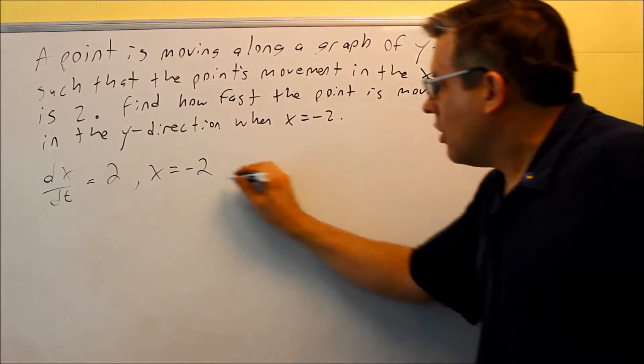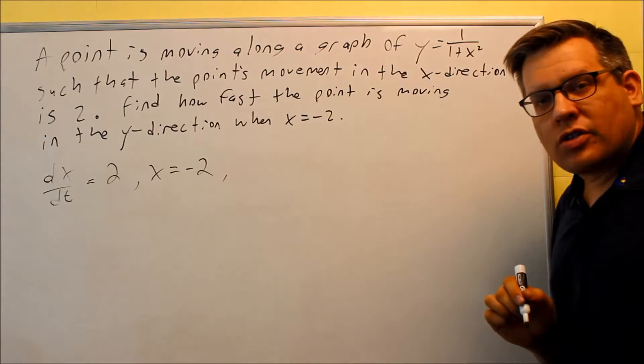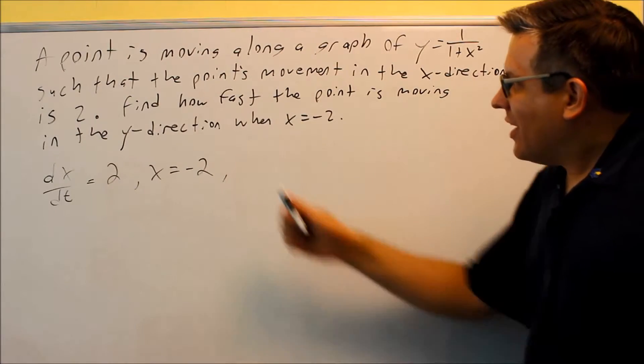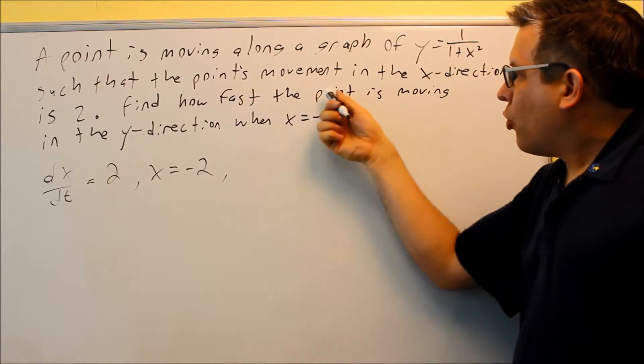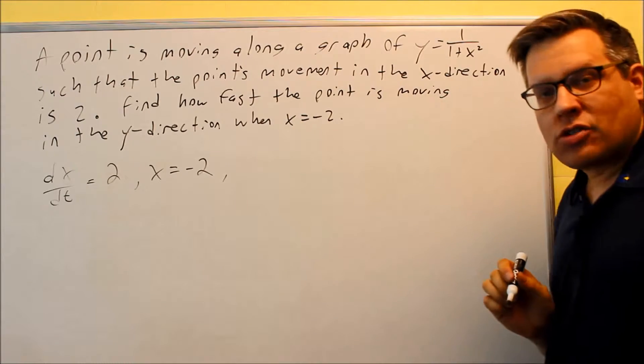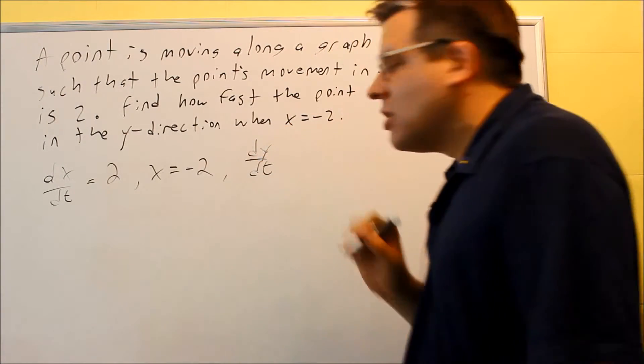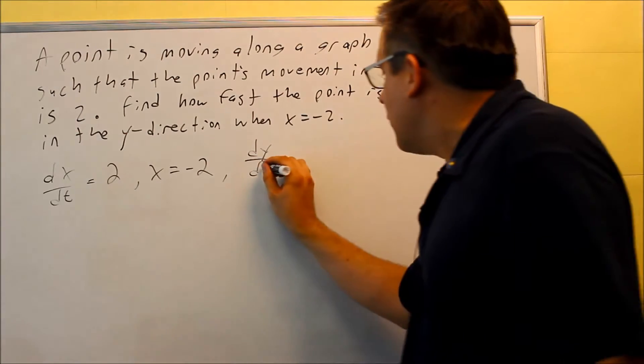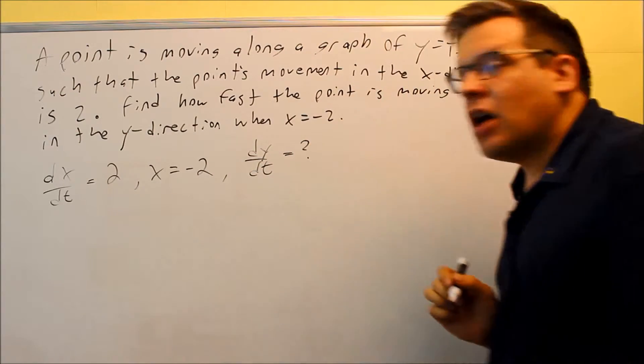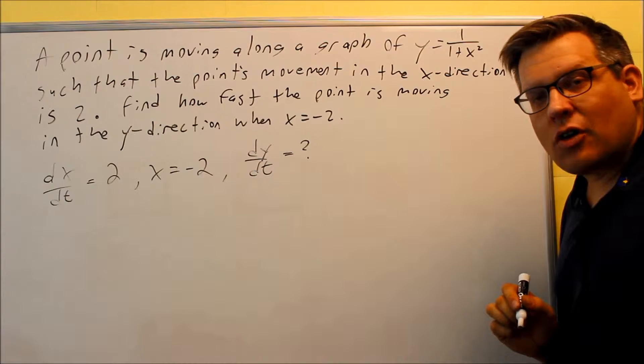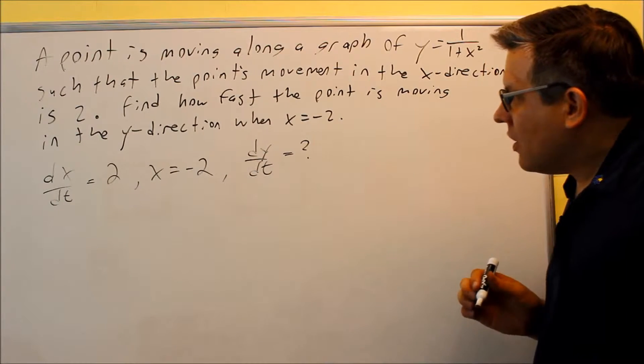But now let's identify what it is they want you to solve for here. Find how fast the point is moving in the y-direction. Okay, so movement in the y-direction—that is dy/dt. That's that variable; this is the unknown that's the one they want you to solve for here.